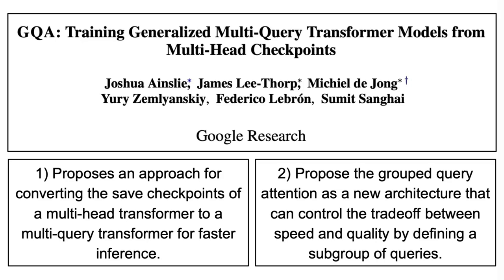But, in addition, they also propose the grouped query attention as a new architecture that can control the tradeoff between speed and quality, by defining a subgroup of queries and using a single share key and a single share value in each subgroup.